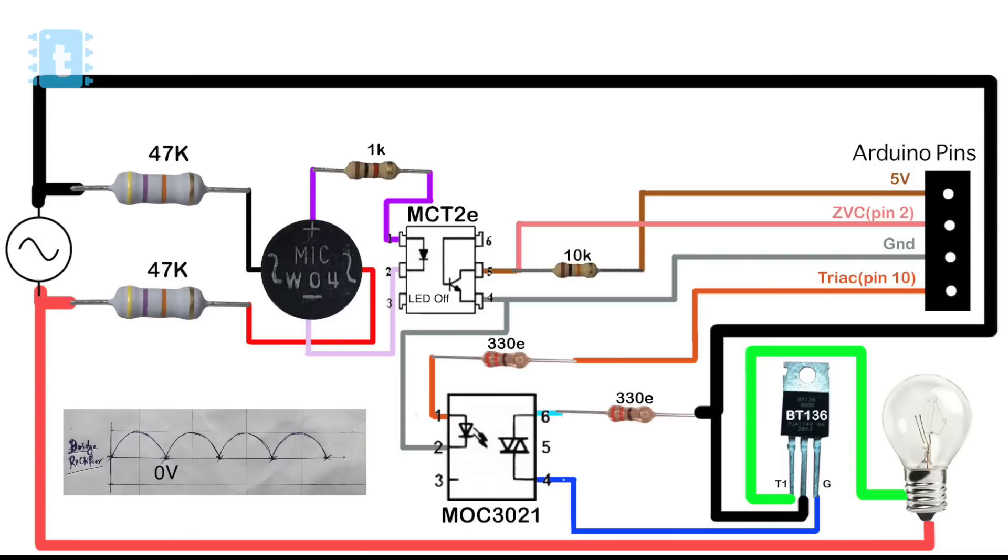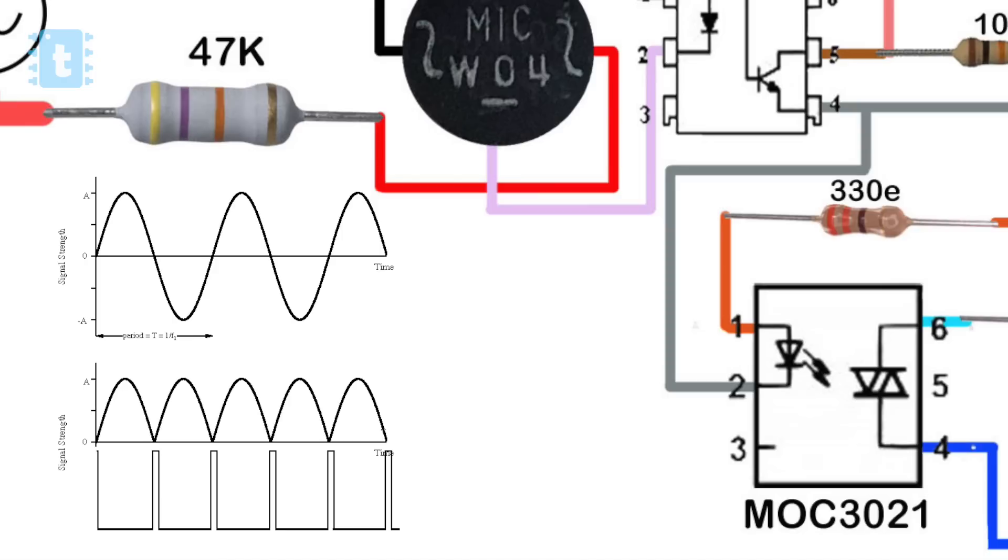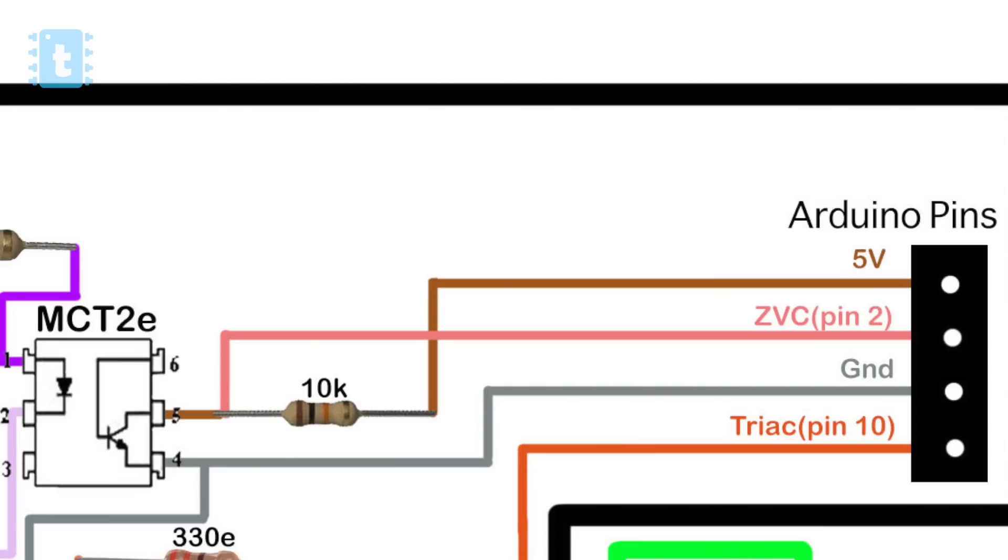Now as soon as the signal crosses the zero volt, the LED will turn on and the signal to the Arduino will be given as digital zero. So in short we will be getting pulses every time the signal crosses the zero value. So this circuit is also known as zero cross detector circuit. Here this pin is connected to Arduino which is called as zero voltage crossing or ZVC.